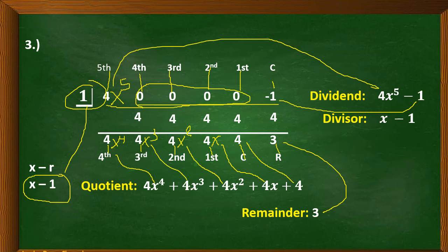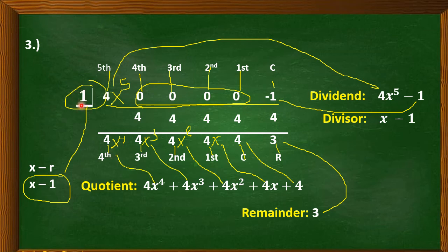Always remember: the dividend is always in the first row of the upper part, and you always begin with the constant term, then the first degree term, second, third, fourth, fifth, and so on. For your divisor, follow the format x minus r, then substitute. For your remainder, it is always the last number in the bottom row. For your quotient, start with the constant, then the first degree term, second degree term, third, fourth, and so on.